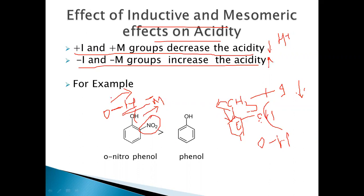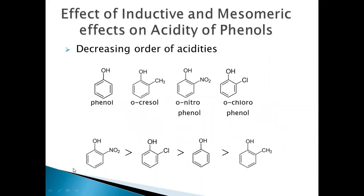Based on the mesomeric and inductive effects, let's arrange these phenols in decreasing order of their acidities: ortho-cresol, orthonitrophenol, and orthochlorophenol. The methyl group is a +I group, the nitro group is a minus M group, and the chloro group is a minus I group. The minus M group increases acidity by decreasing electron density on the oxygen, making O–H bond dissociation easy.